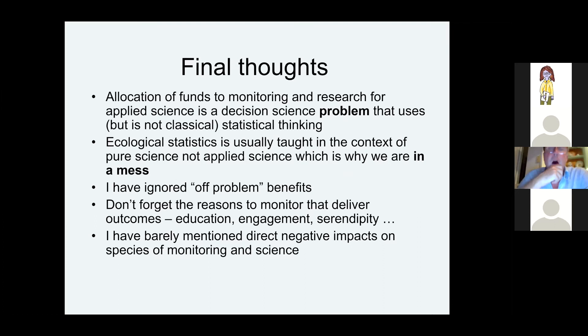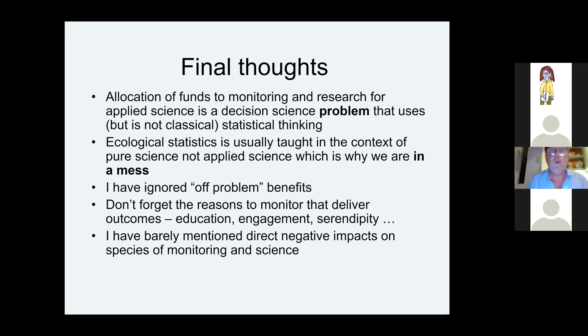Maybe I should ask why we've ended up confused about some of these issues. It's probably because we largely taught statistics in the context of pure science, not applied science. Null hypothesis testing and analysis of variance are incredibly important tools for the progress of human knowledge, but they are not particularly useful in general for advancing applied science, where you generally don't want to be testing null hypotheses. You want to be looking at the size and statistical significance of interventions — which is what applied ecology is all about.